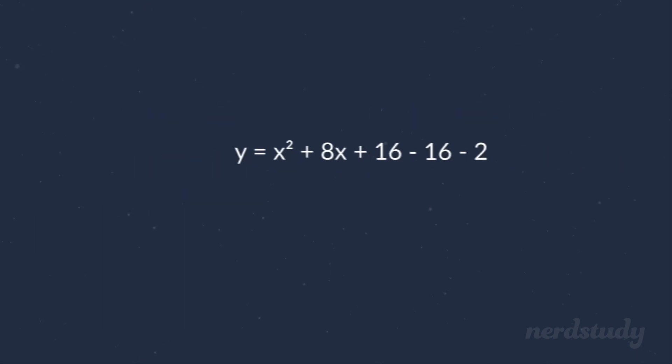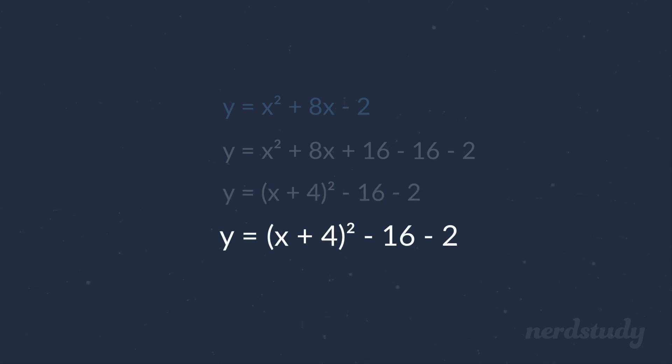So now we know that this can factor into y = (x + 4)² and we have -16 - 2 left over, which can simplify into -18. And there you have it. That's our answer in vertex form through completing the squares.